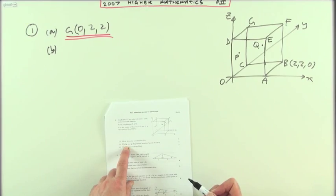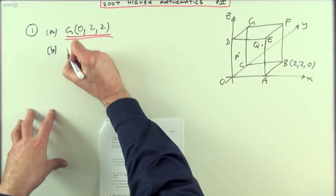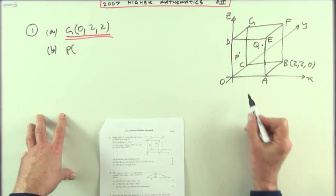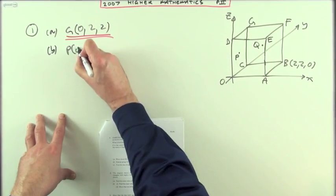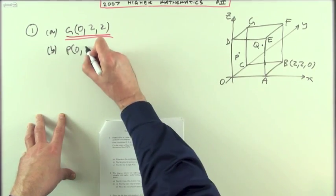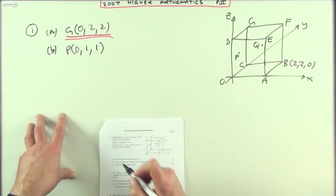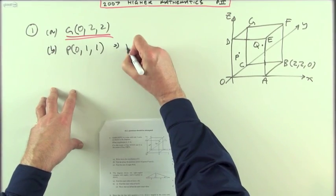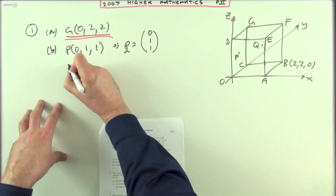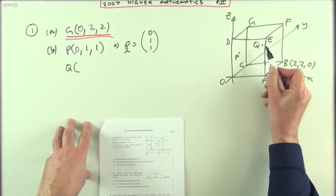Part B: Find the position vectors of P and Q. I'll start by getting their coordinates. P sits at the center of the left hand face, so it's nothing along in the x direction, but halfway back and halfway up to get to the center. Halfway back would be one and halfway up would also be one, which means the position vector of P is (0, 1, 1).